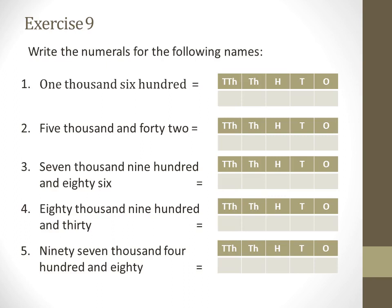Moving on to the first example. The name written is: one thousand, six hundred. With the help of the place value chart, we will answer this. What is written first? One thousand — so under the thousands period, we will write 1. Then six hundred — so under the hundreds section, I will write 6. No information is given about tens and ones, so we will put zero in those sections. The answer is one thousand six hundred — 1,600.